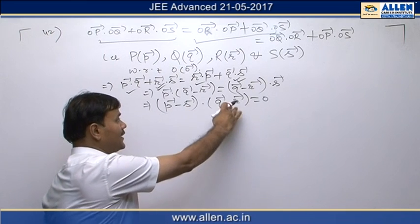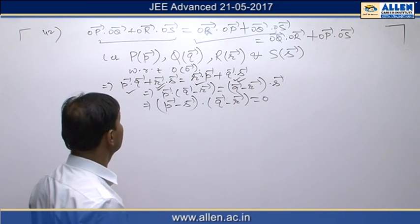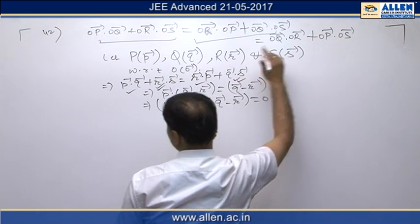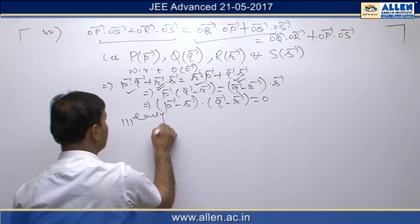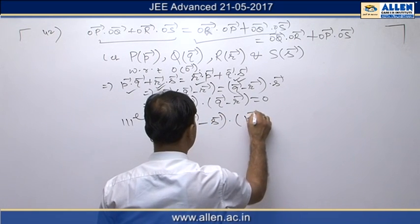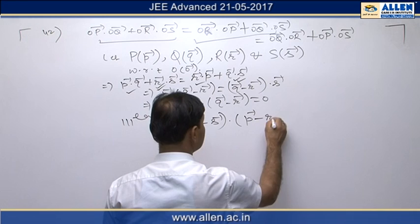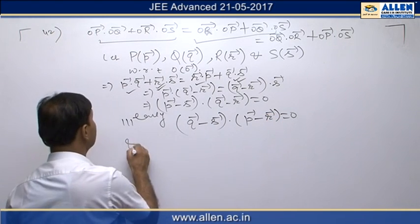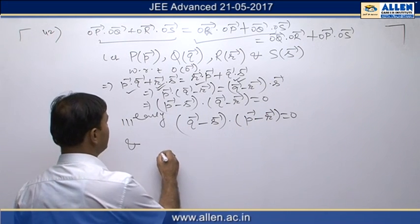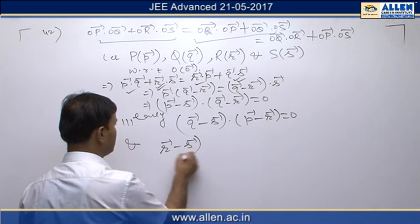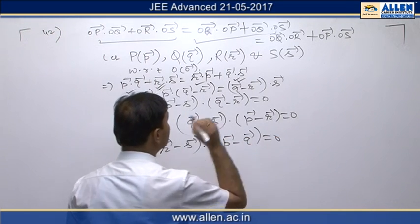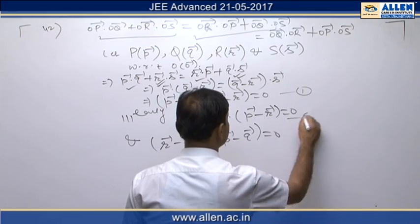This means these two vectors are perpendicular to each other. Similarly, from the second equality we get (Q vector - S vector)·(P vector - R vector) = 0, and from the third equality we get (R vector - S vector)·(P vector - Q vector) = 0. So we obtain these three relations simultaneously.